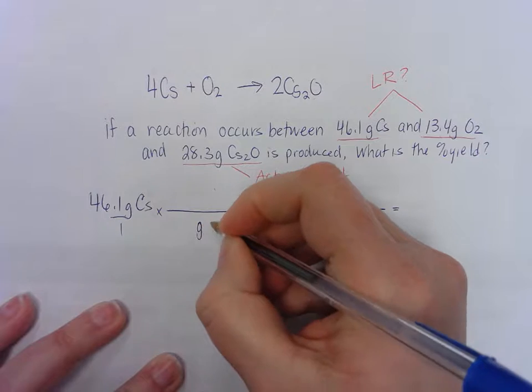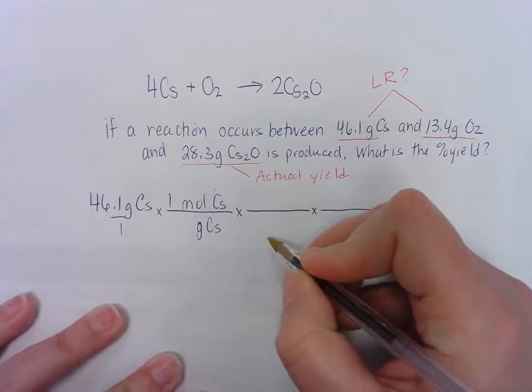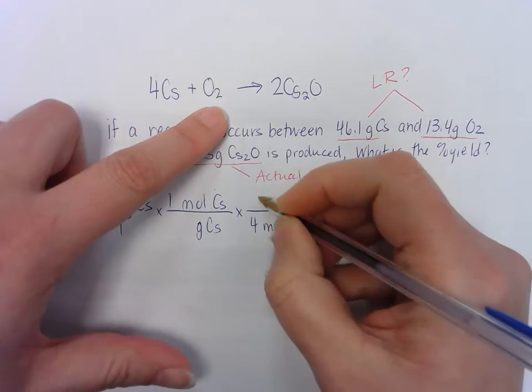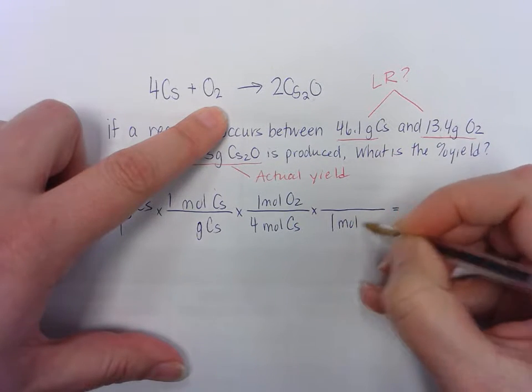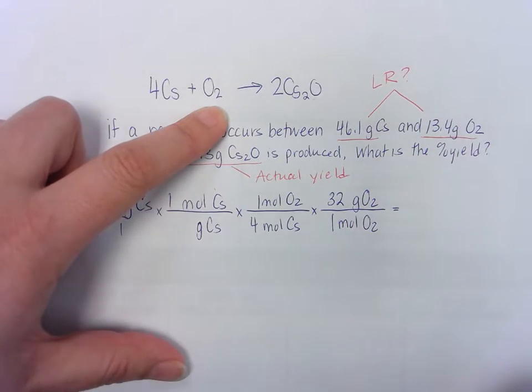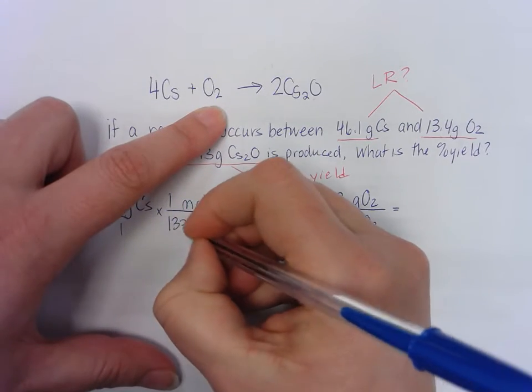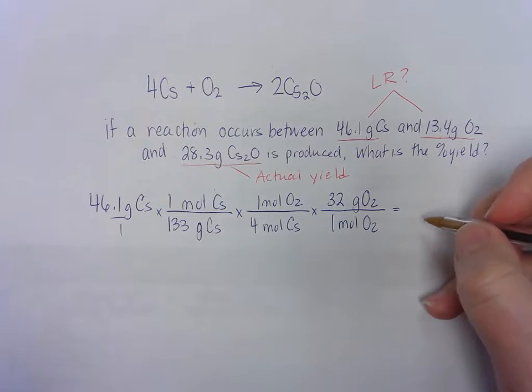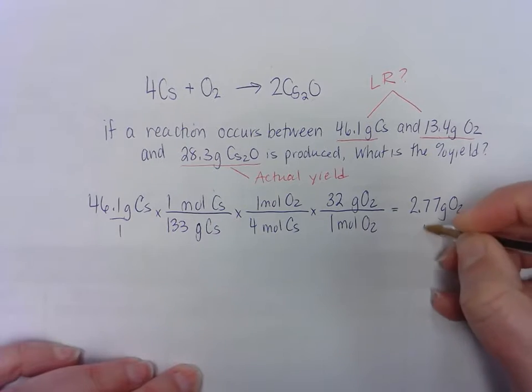I'm going to put my grams of cesium on the bottom, and that's equal to one mole. And in the balanced equation, I have four moles of cesium and one mole of O2. And then I'm going to change it back into grams. And the molar mass of oxygen is 32 and the molar mass of cesium is 133. And these are both rounded to whole numbers. And when you do the math on the calculator, you get 2.77 grams of O2. And this is how much you need.